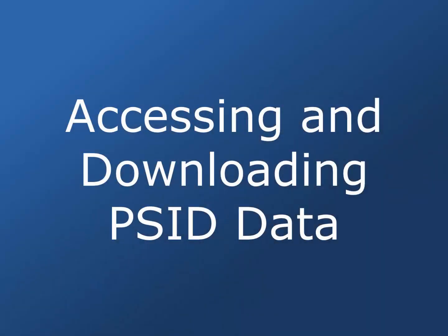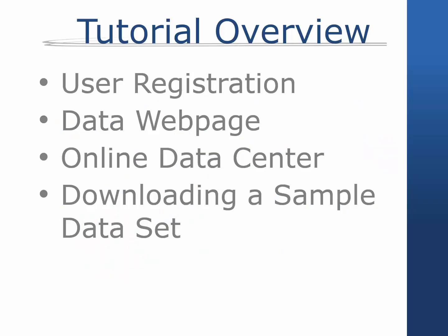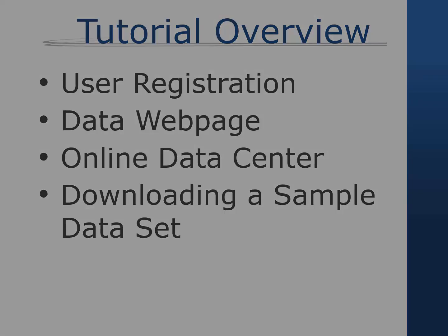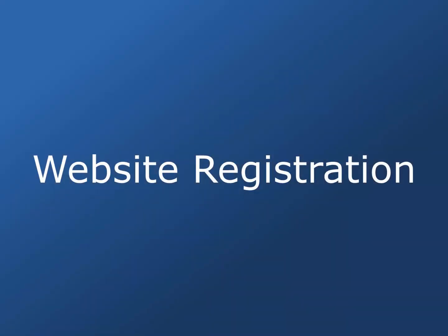Welcome to the web tutorial on accessing and downloading PSID data. To begin, let's go over what you can expect to learn. This tutorial has four parts: an overview of how to register as a data user, an explanation of the data web page, information on the four methods of selecting variables using the PSID's online data center, and a demonstration on downloading a sample data set. We will start on the PSID's homepage, psid.org.